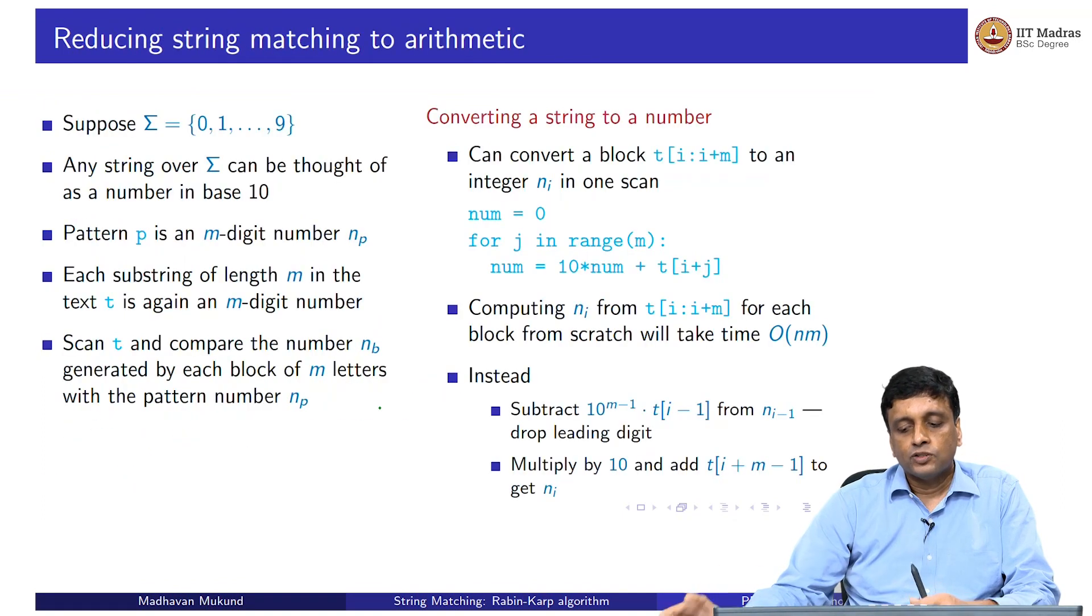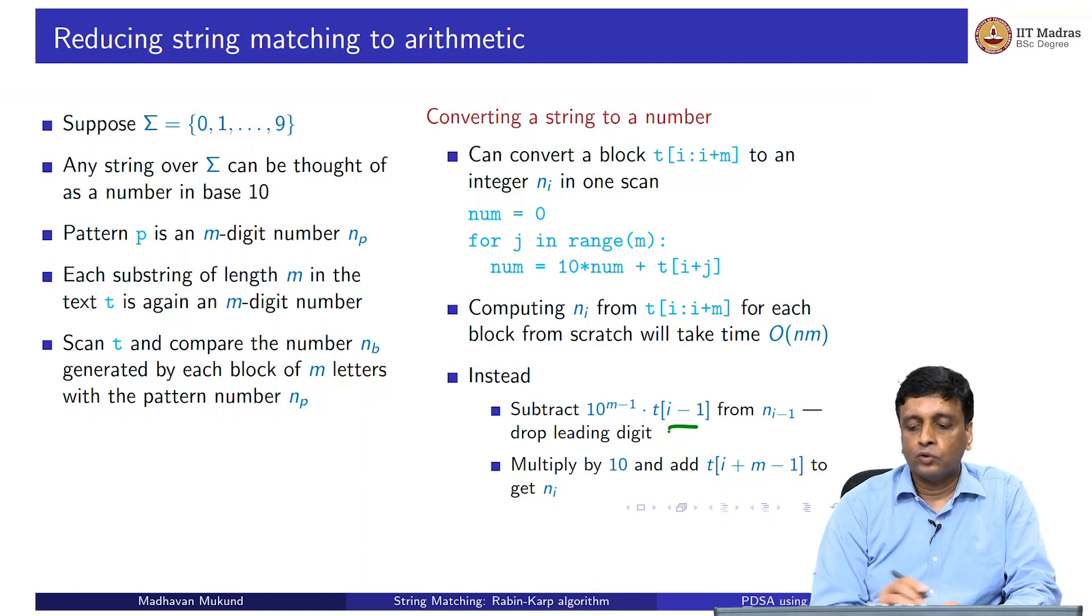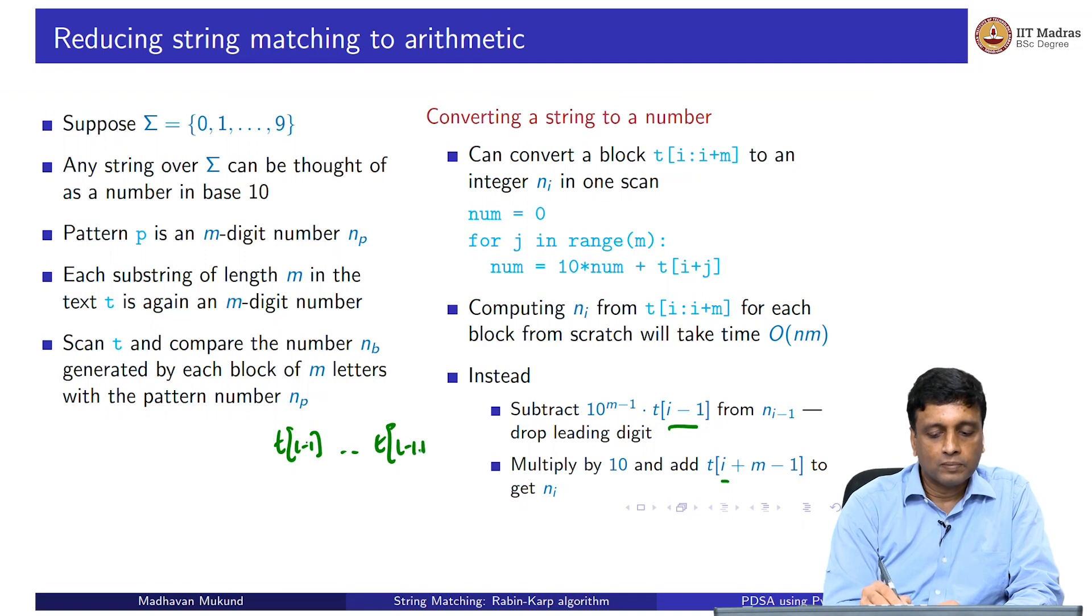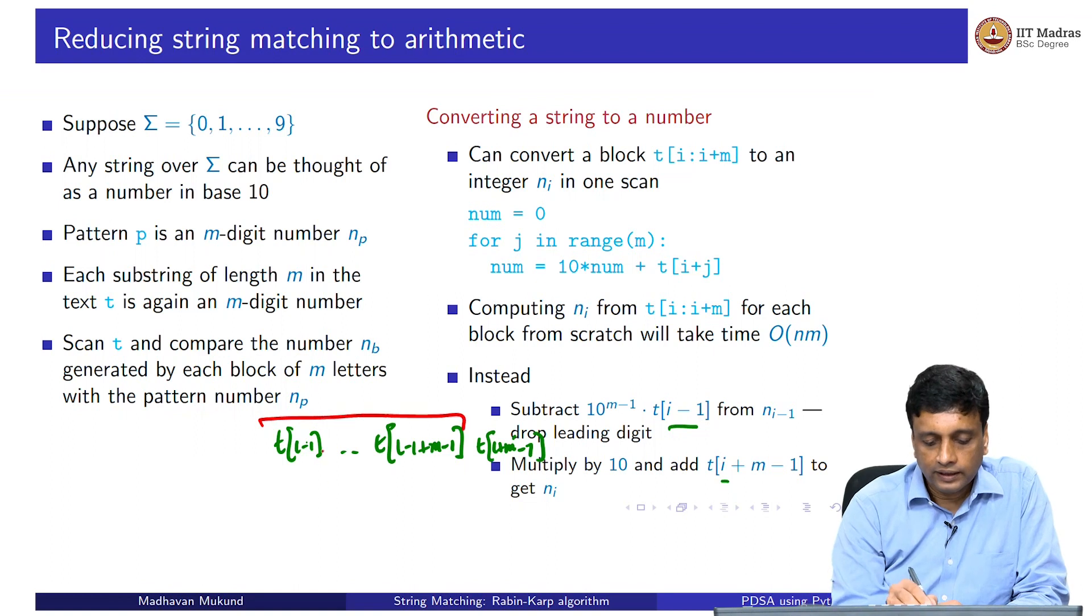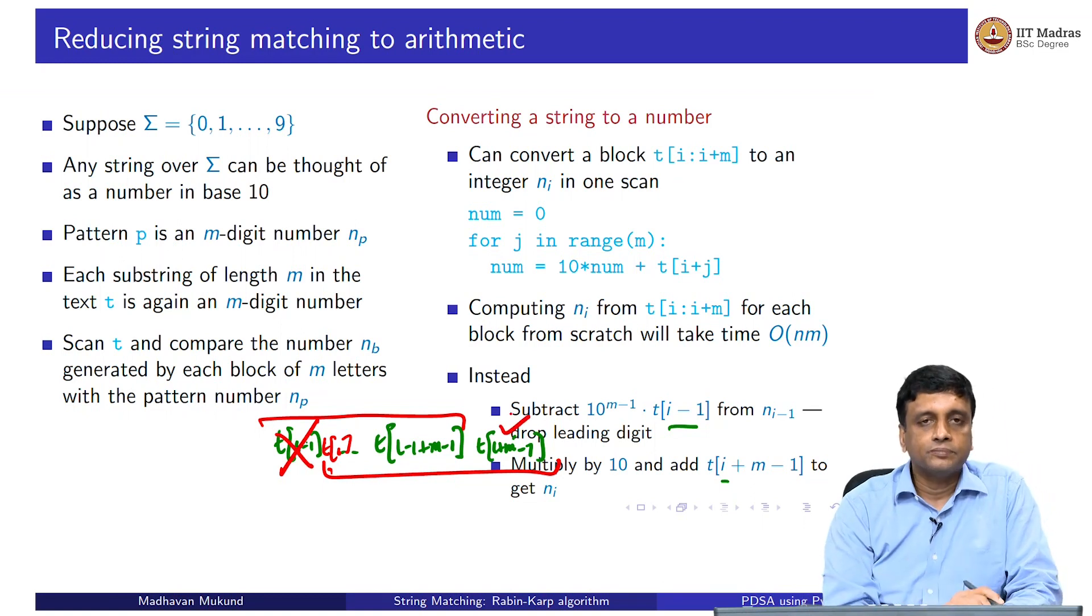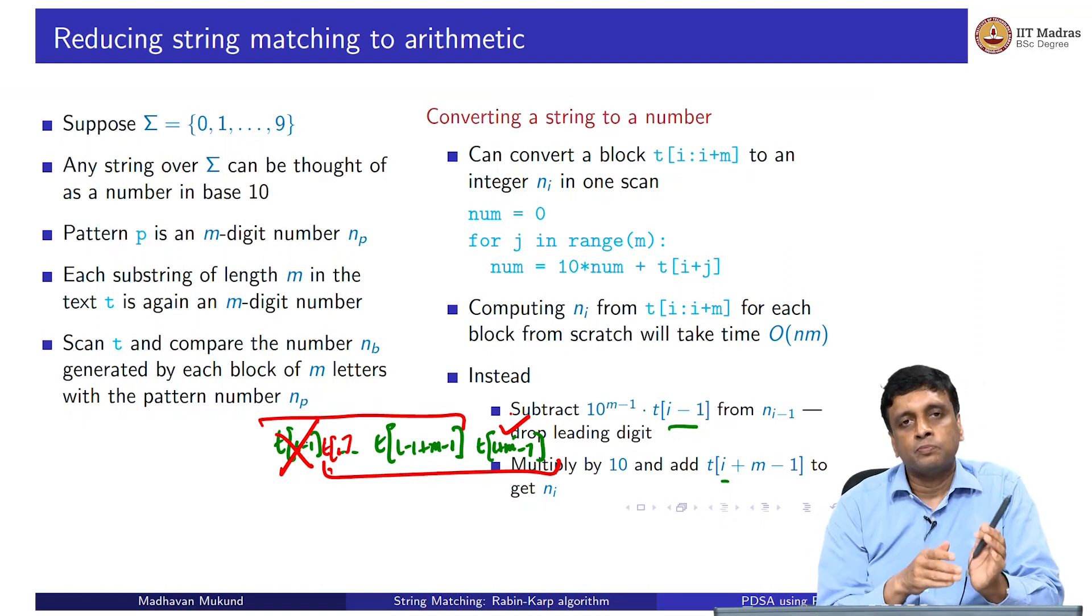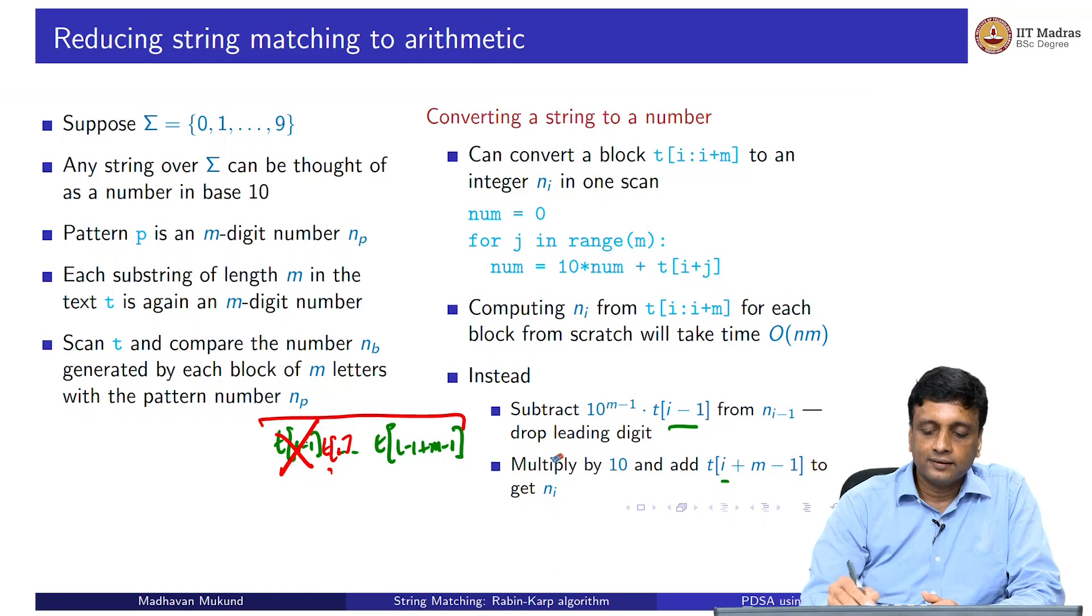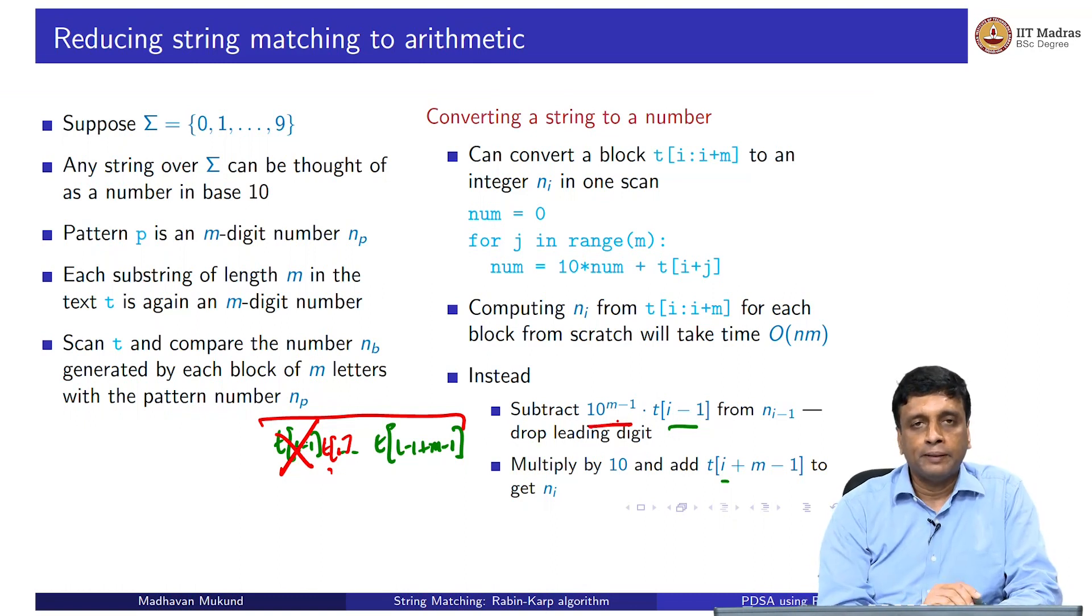But fortunately, you can slide the number from one block to the next block without having to do order m work. The idea is very simple. If I want to go from the block starting at i minus 1 to the block starting at i, what do I need to do? I have t[i-1] up to t[i-1+m-1], and then I am going to look at the next one t[i+m-1]. This is my old block and starting at t[i] is my new block. What I need to do is drop this digit and add this digit. I need to drop the leftmost digit, the highest digit in the previous number, multiply by 10 so that I can make space to add a new units digit.